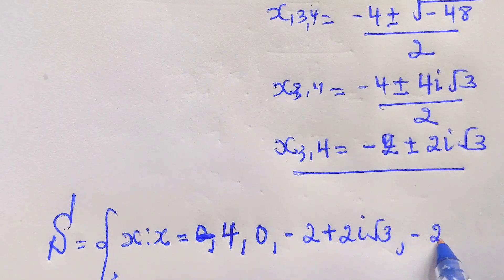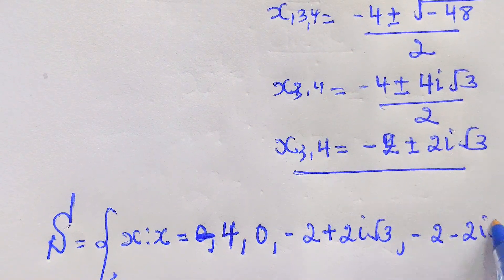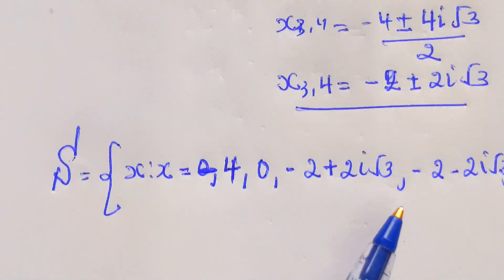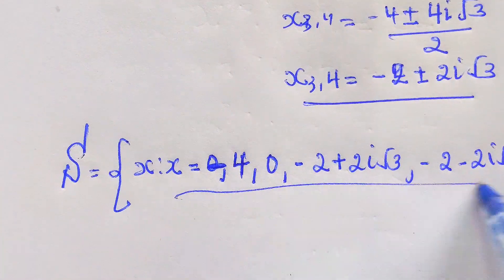So we have x3 equals negative 2 plus 2i square root of 3, and x4 equals negative 2 minus 2i square root of 3. And these are the answers.